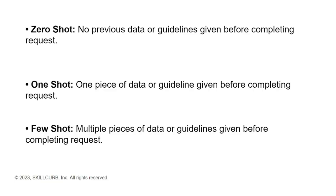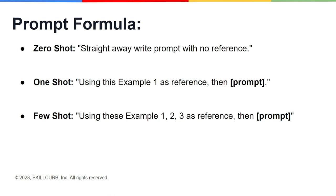The prompt formula for zero shot prompting is: write your prompt with no reference. For one shot prompting, put one example or reference and then write your prompt related to that. For few shot prompting, use examples one, two, three — or as many as you want — as your reference, and then write the prompt related to that reference. Let's jump right into ChatGPT and see these examples.